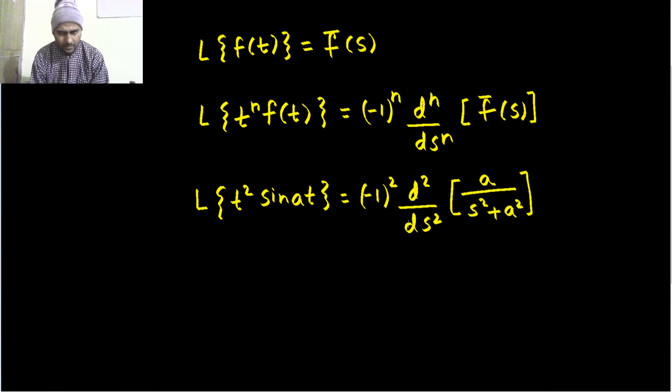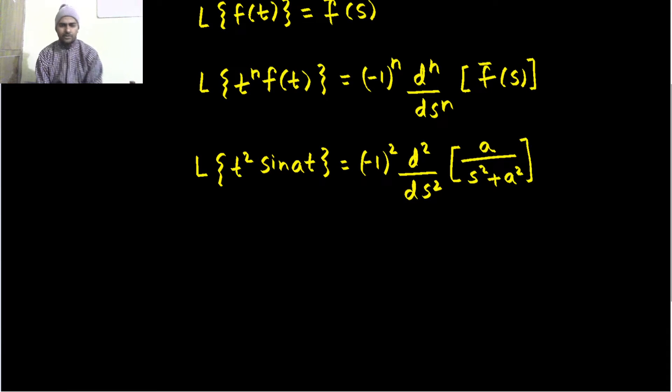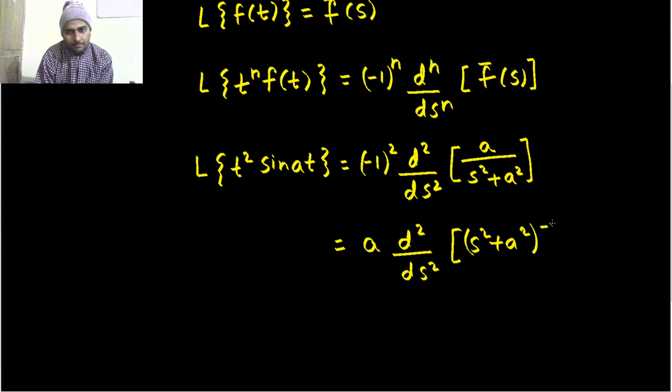So, in this obviously minus 1 power 2 is 1 only, so we do not have to bother about that. And here we can use the quotient rule or we can write this in a better way as